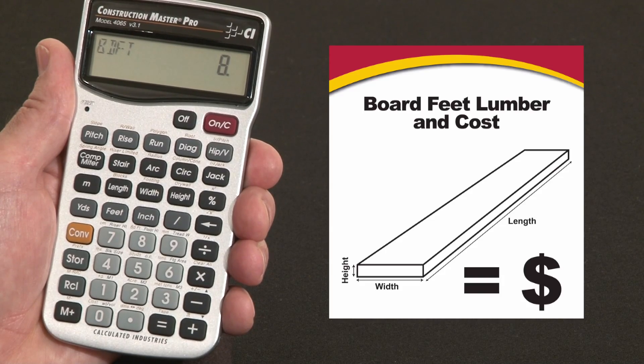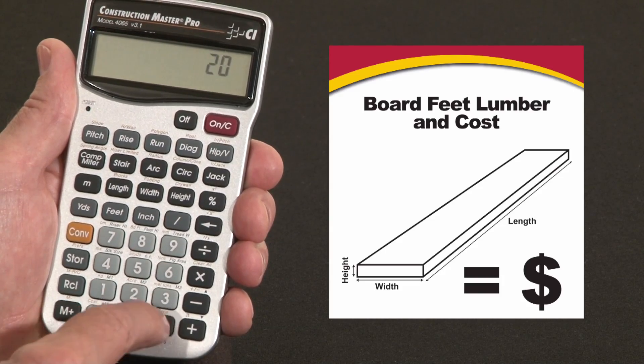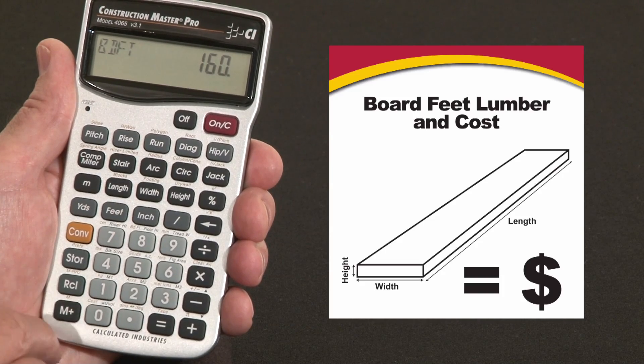So 2x4x12 is 8 board feet. Say I need 20 of those, times 20 equals 160 board feet. Let's put that in the memory.